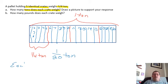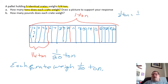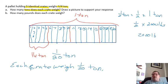Each crate weighs one-twentieth of a ton. Now the second part of this question is how many pounds does each crate weigh? We're going to start off by saying one-twentieth ton equals one-twentieth times one ton. One ton equals 2,000 pounds, so I'm going to do 2,000 pounds times one-twentieth, which equals 2,000 pounds over 20. So that means each crate weighs 100 pounds.